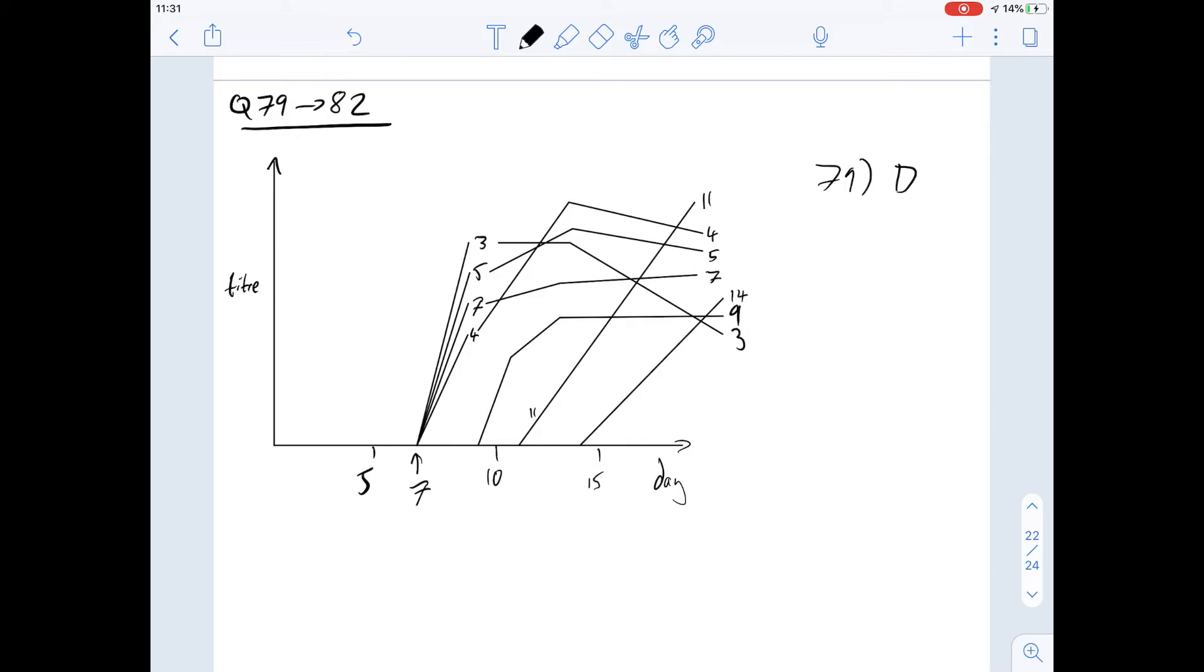Question 80 says figure one indicates that on day 15 the rabbit had the greatest immunity against which one. So day 15 is here. If we draw a line up we can see that the highest level of immunity was to day 4 trypanosomes and so the answer for this one is going to be B. This is because the titer is the highest for day 4 trypanosomes on that day.